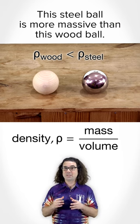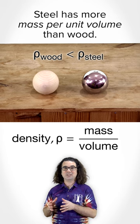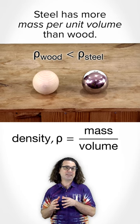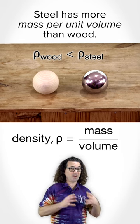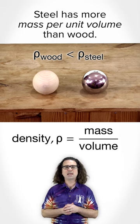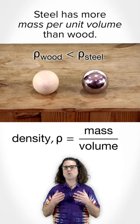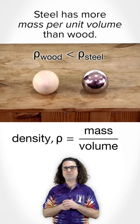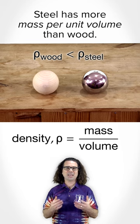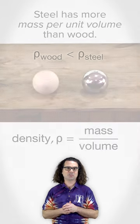So, we can say that steel has more mass per unit volume than wood; however, without knowing the volumes of the objects, we cannot answer the question.